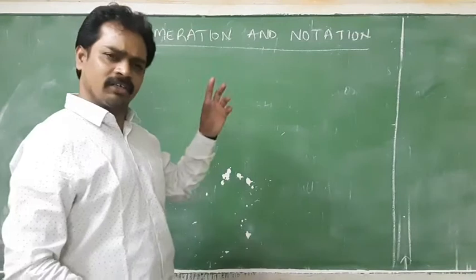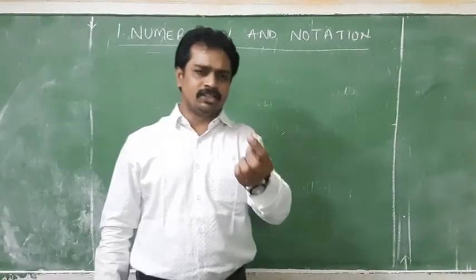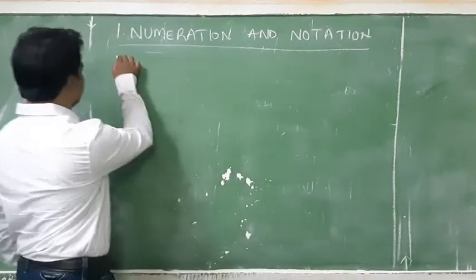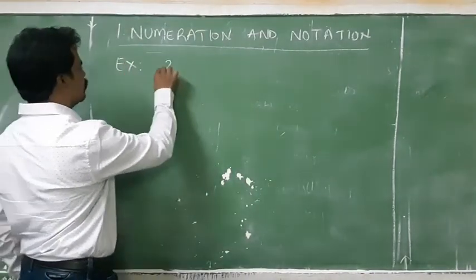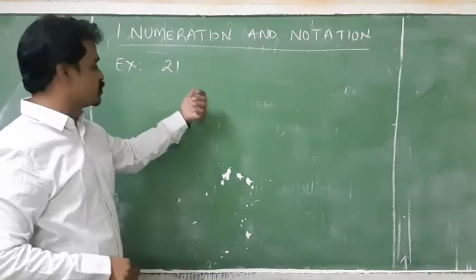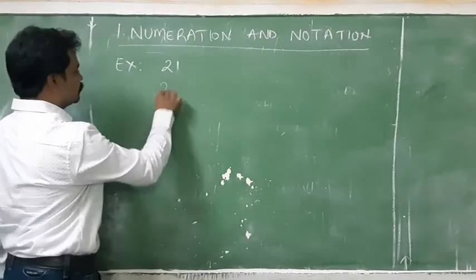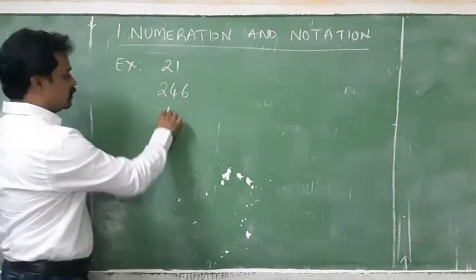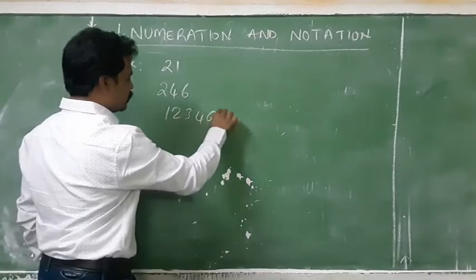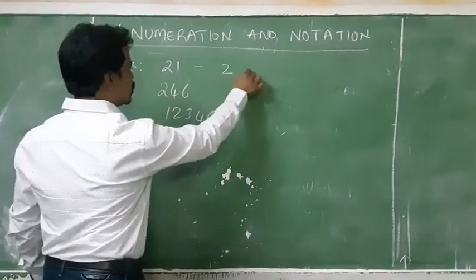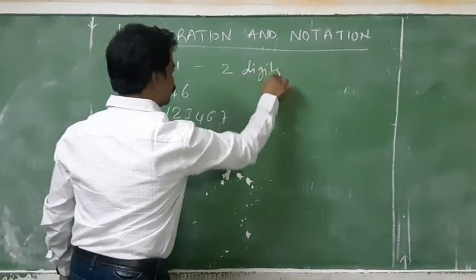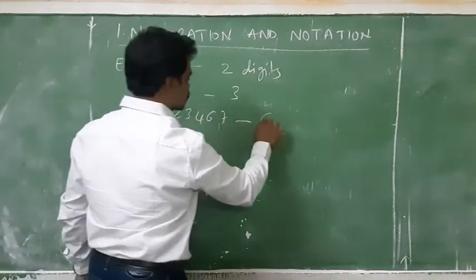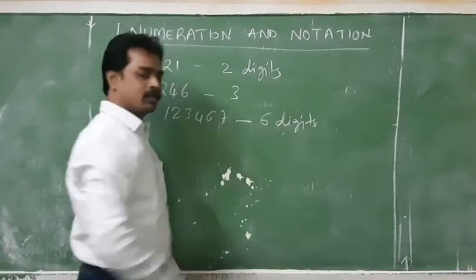First, digits. One number is called one digit. For example, I will write twenty-one — how many digits are there? One and two. If I write another number, how many digits? One, two, three. Here, two digits are there. Here, one, two, three, four, five, six digits. These are digits.